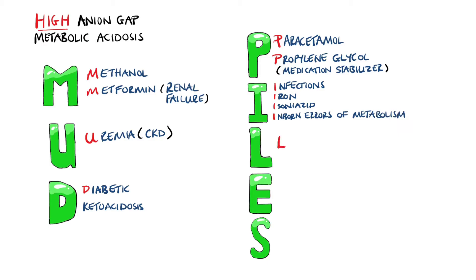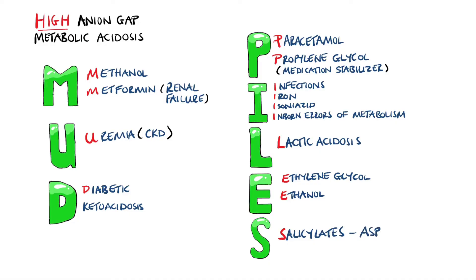L stands for lactic acidosis, while E represents ethylene glycol and ethanol. S is for salicylates, so this is where you remember aspirin.